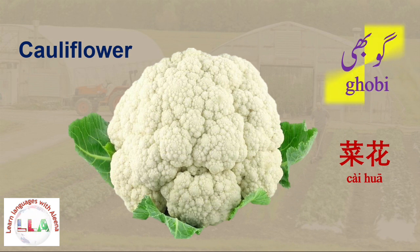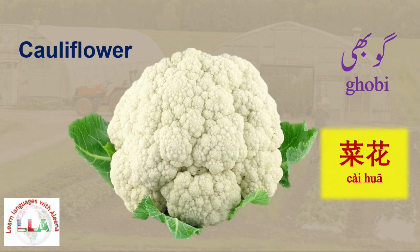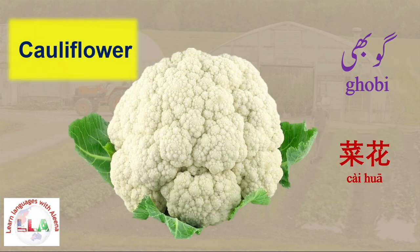In Urdu we say gobi, gobi. In Chinese we say tai hua, tai hua. In English we say cauliflower, cauliflower.